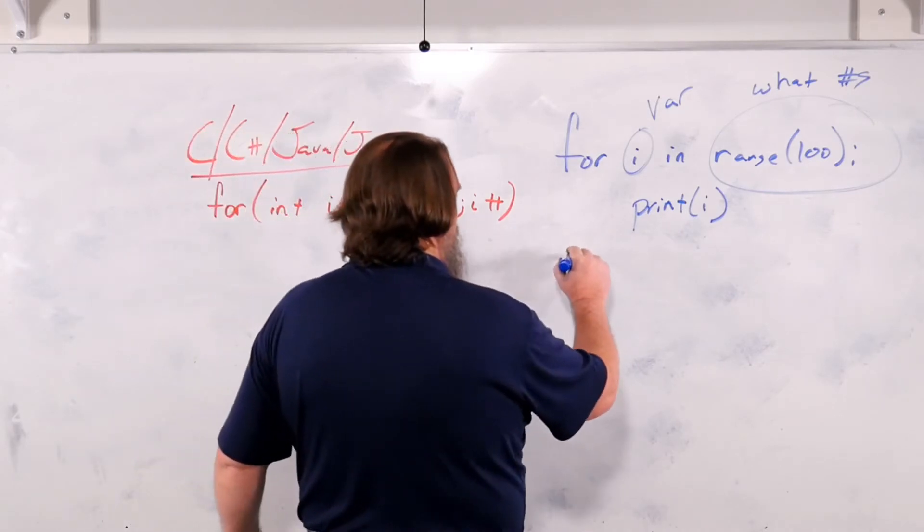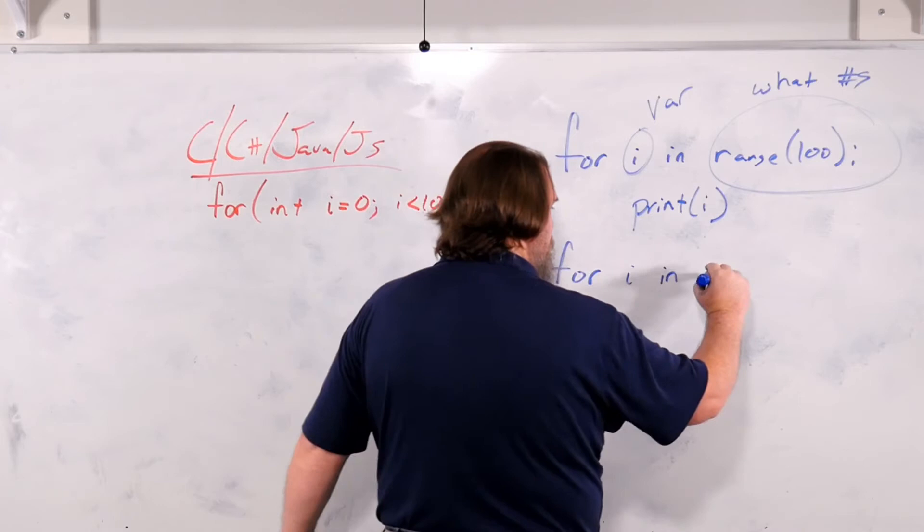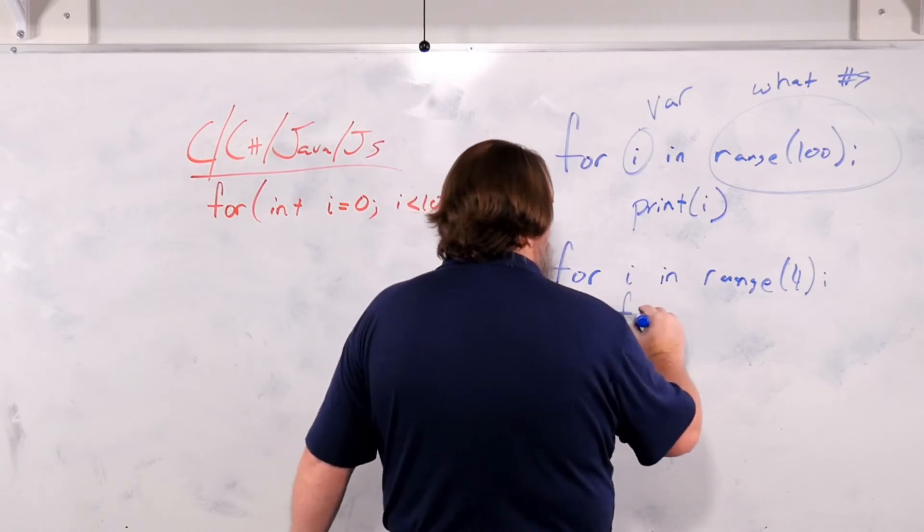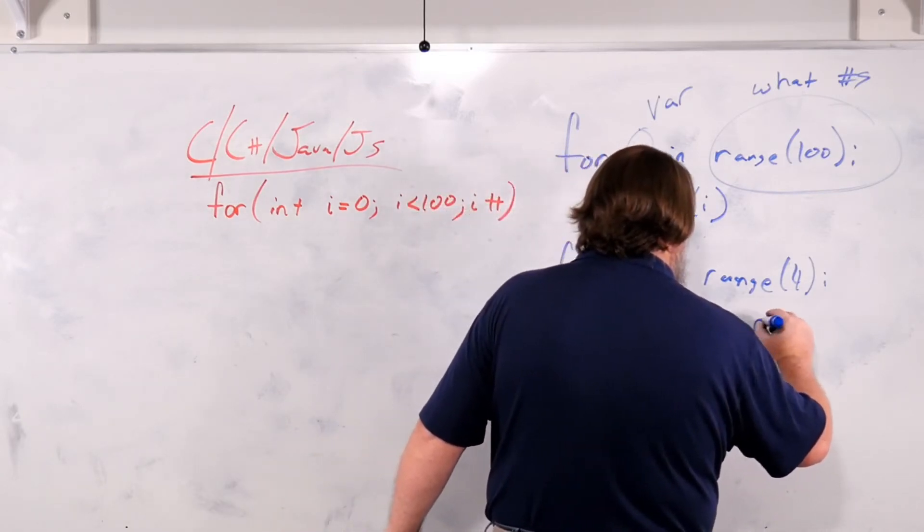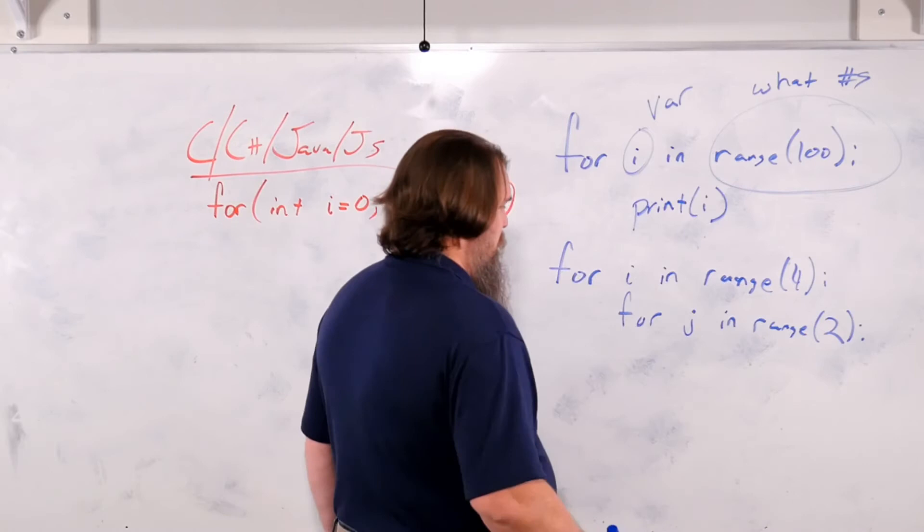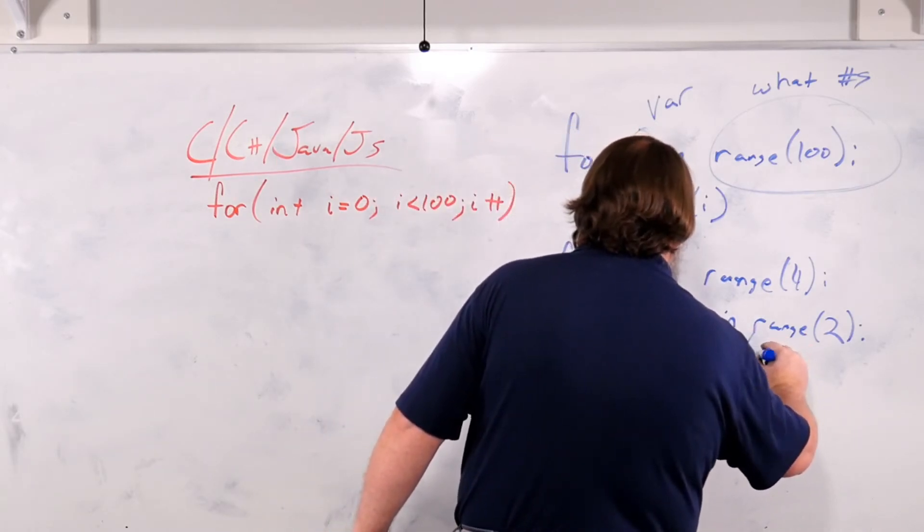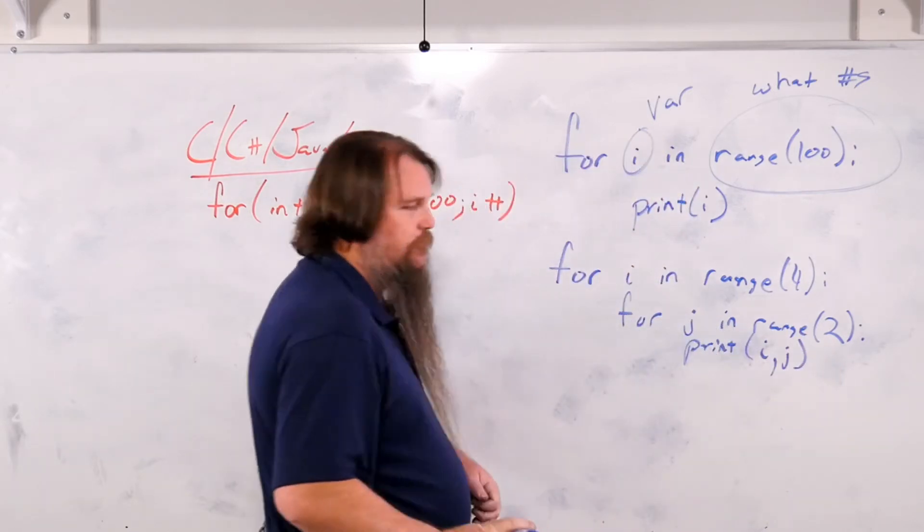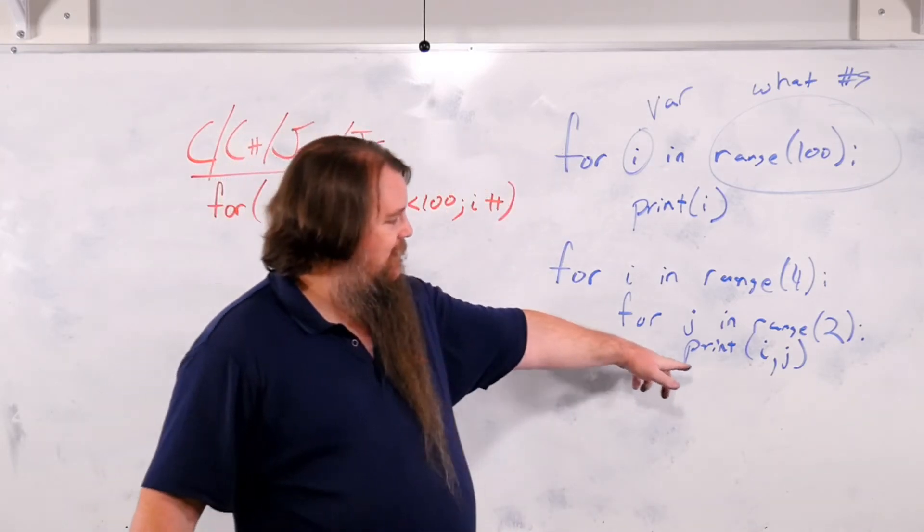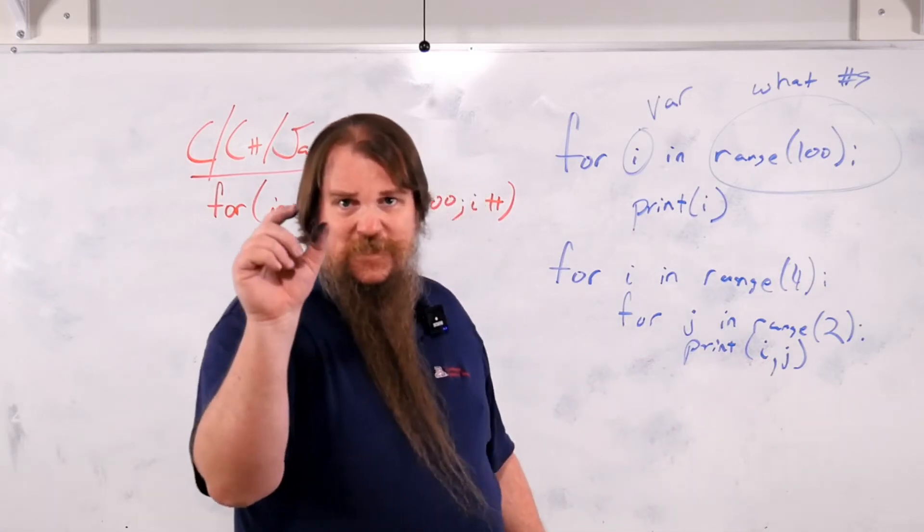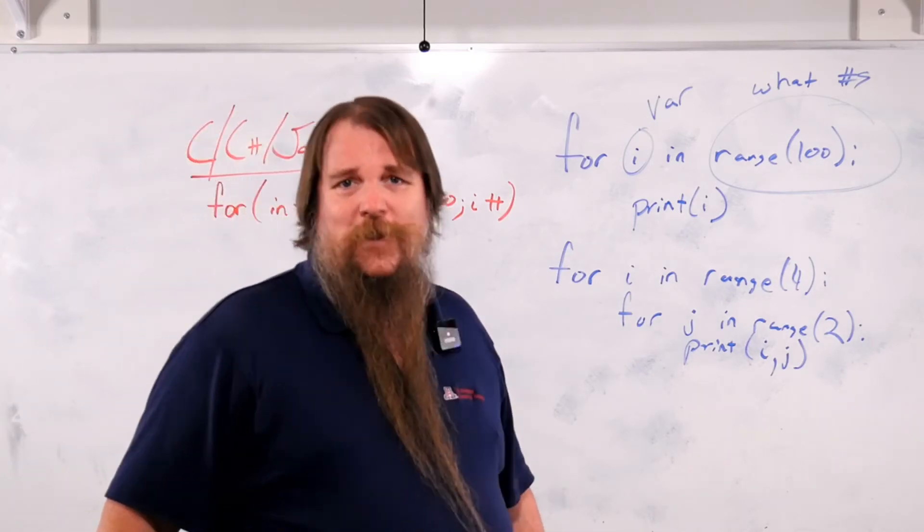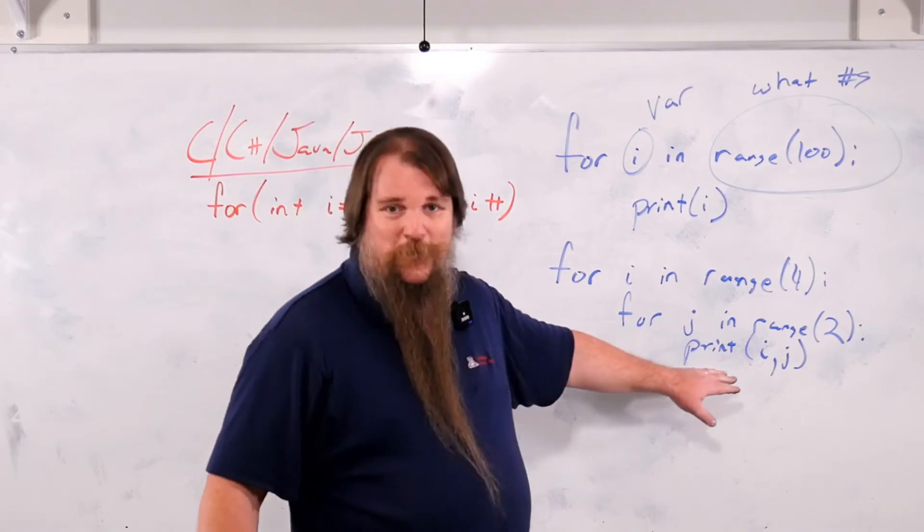You can, of course, do nested loops for i in range 4, for j in range 2, print i, j. Now, what does print i, j do? Well, I'll tell you that. It's going to print i, and then a space, and then it's going to print j. Not a very advanced way of doing formatted printing, but we'll get more advanced as time goes by.